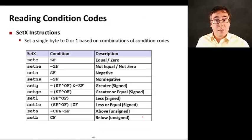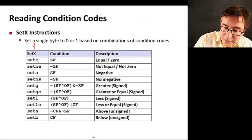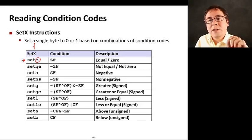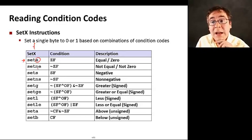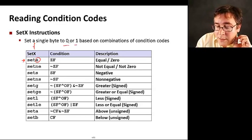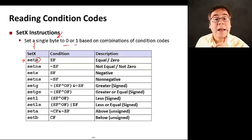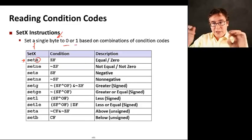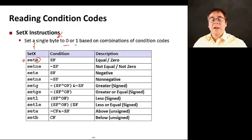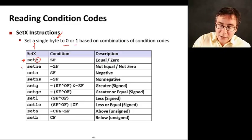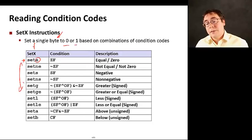We can also read condition codes. There are several instructions called set with a bunch of options here. What they do is they read the condition codes and put the resulting value as zero or one, the whole byte zero or one, in a general purpose register. So you can actually read and do computation with the contents of the condition code register. Essentially, you get the value of the condition code register and you store it into a general purpose register. I encourage you to look at the book for examples of those. We're going to see one now, but you should read how each one of these instructions work.